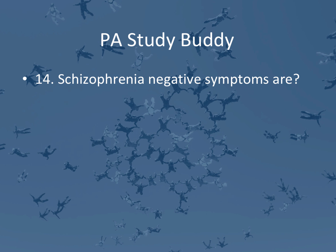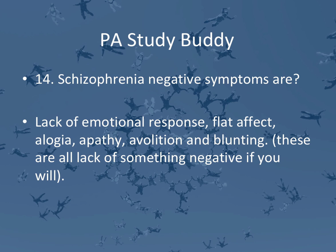Question fourteen: schizophrenia — negative symptoms. They'll give you different symptom choices and ask which is a negative symptom. Negative symptoms are a lack of emotional response: flat affect, alogia, apathy, avolition, and blunting. These are all a lack of something — lack of emotion or response, flat affect, apathy. If you see any one of these, those are all considered negative symptoms.